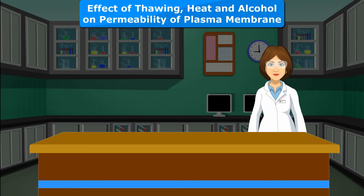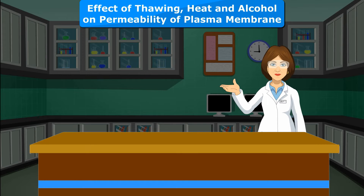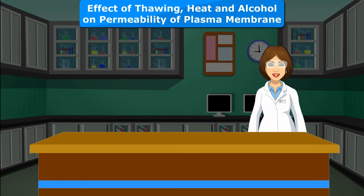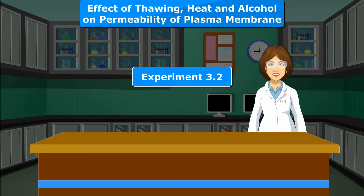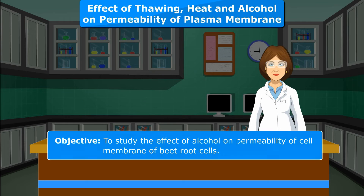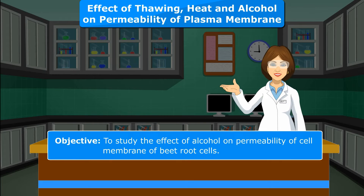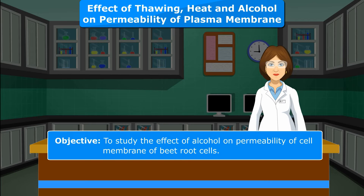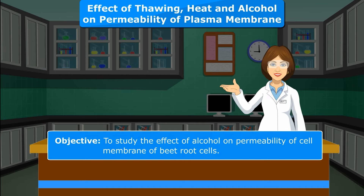Effect of Thawing, Heat and Alcohol on Permeability of Plasma Membrane — Experiment 3.2. Objective: To study the effect of alcohol on permeability of the cell membrane of beetroot cells.